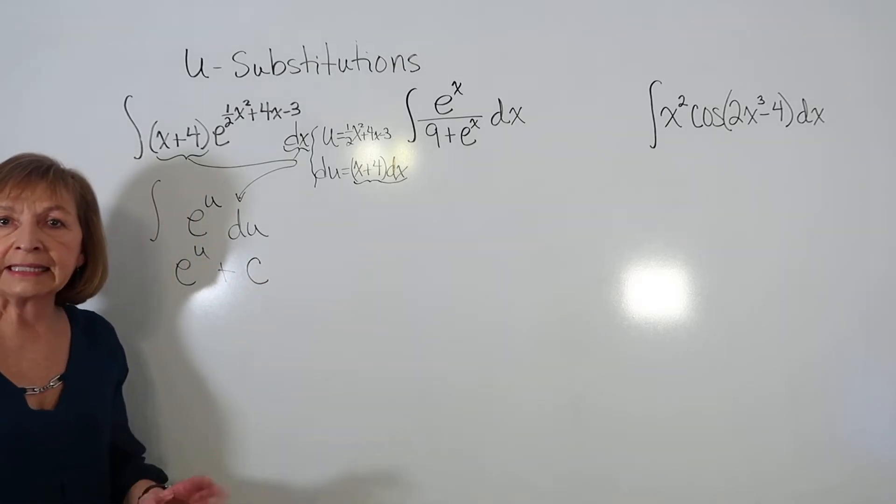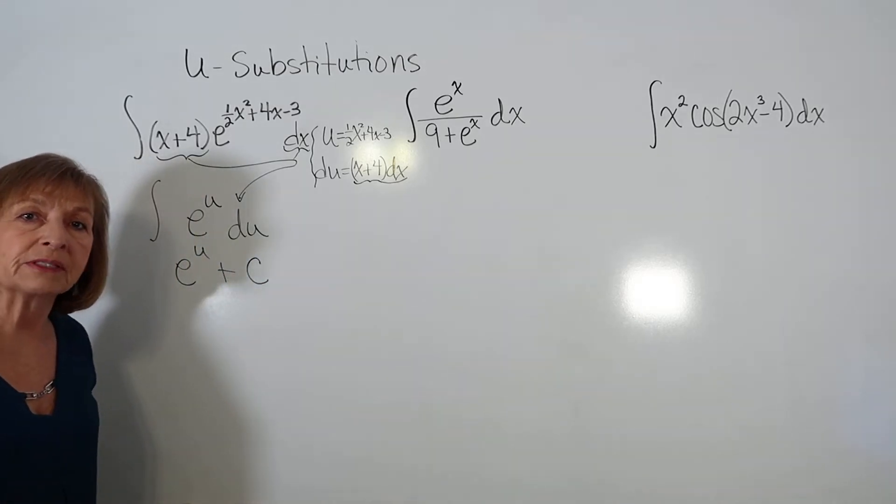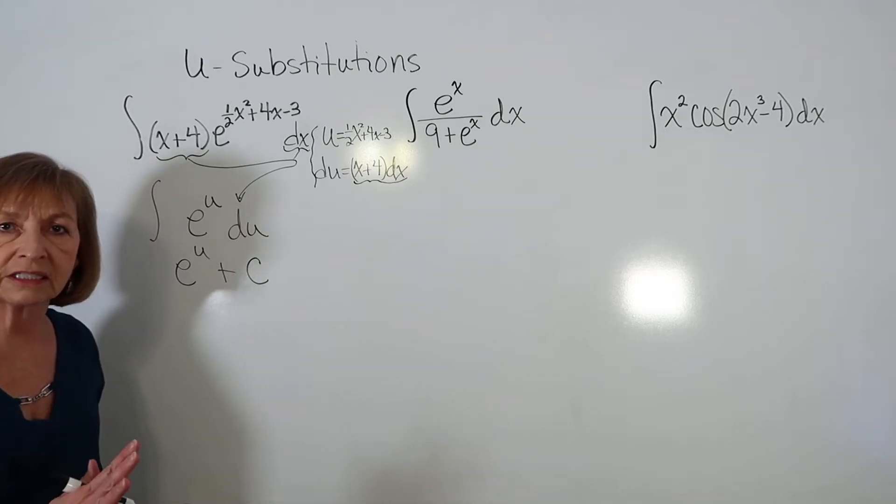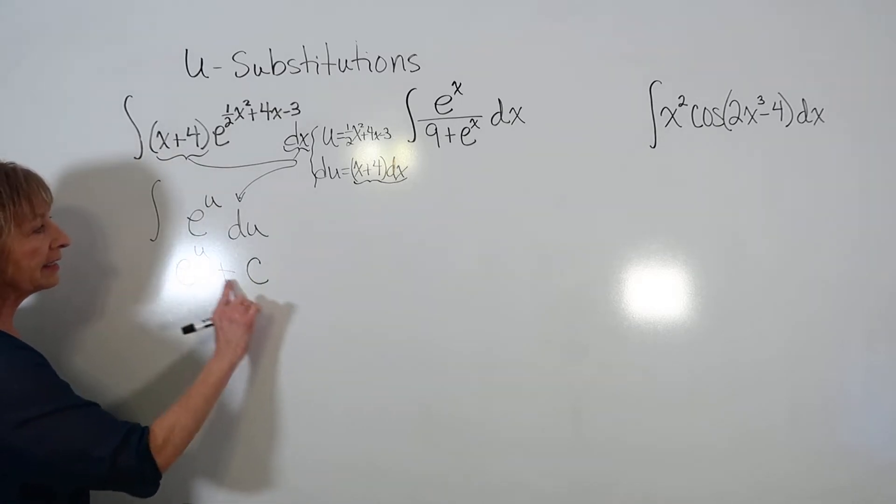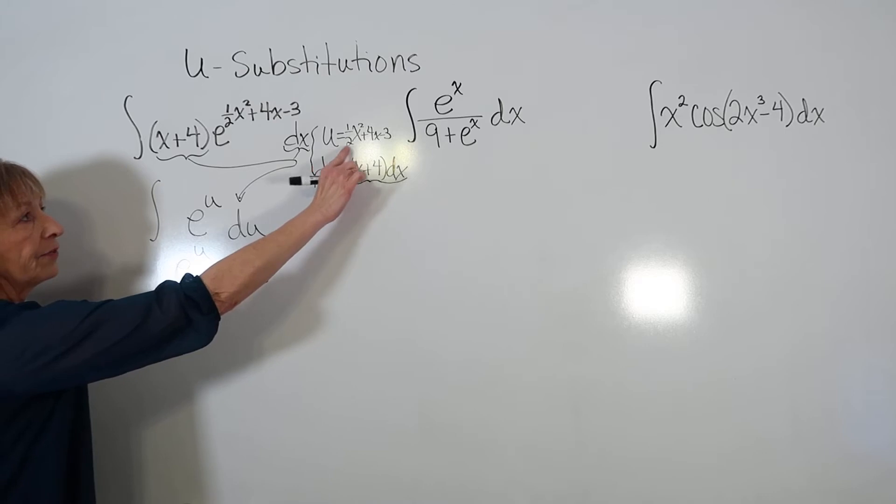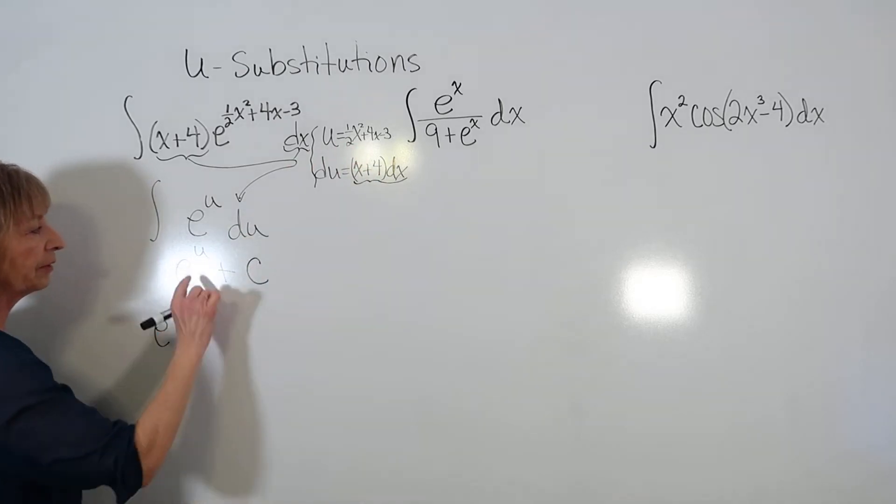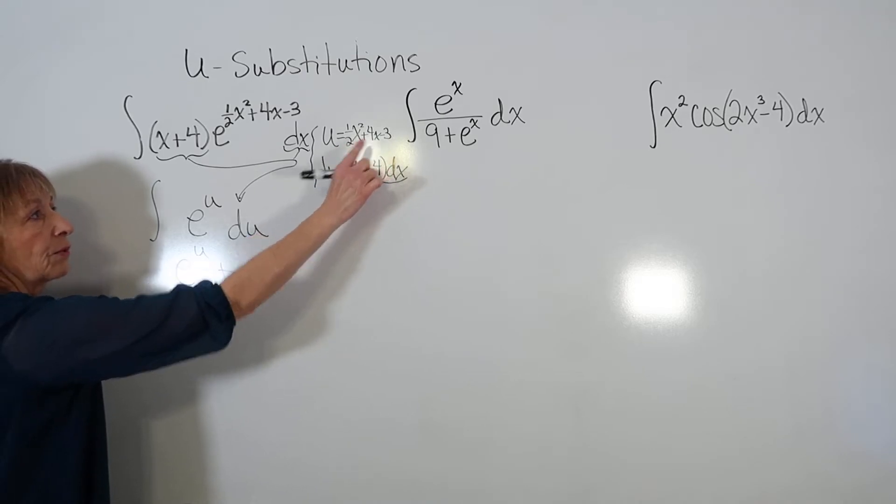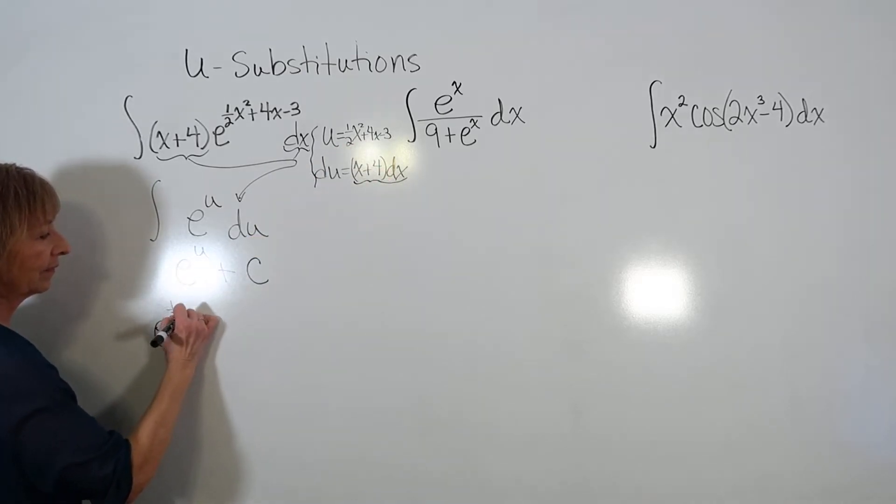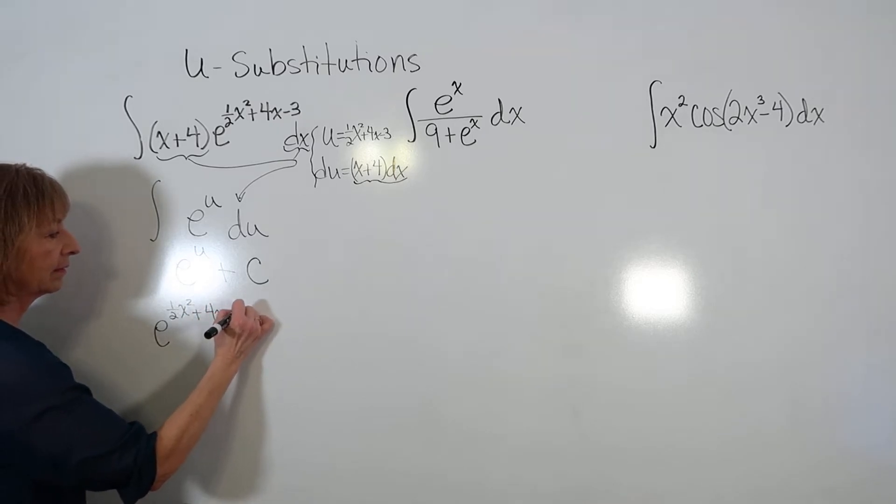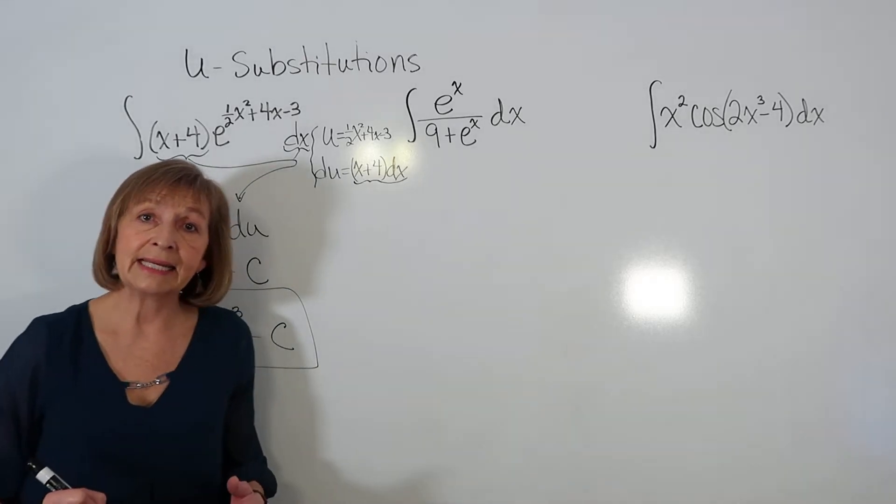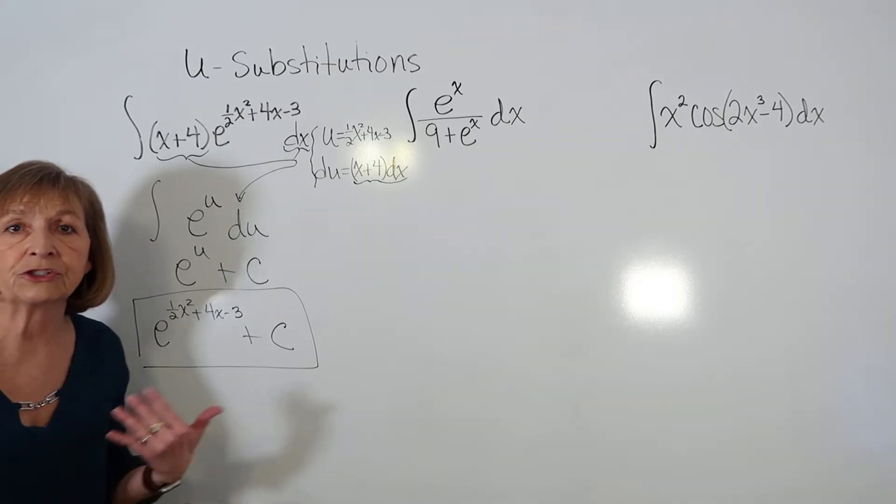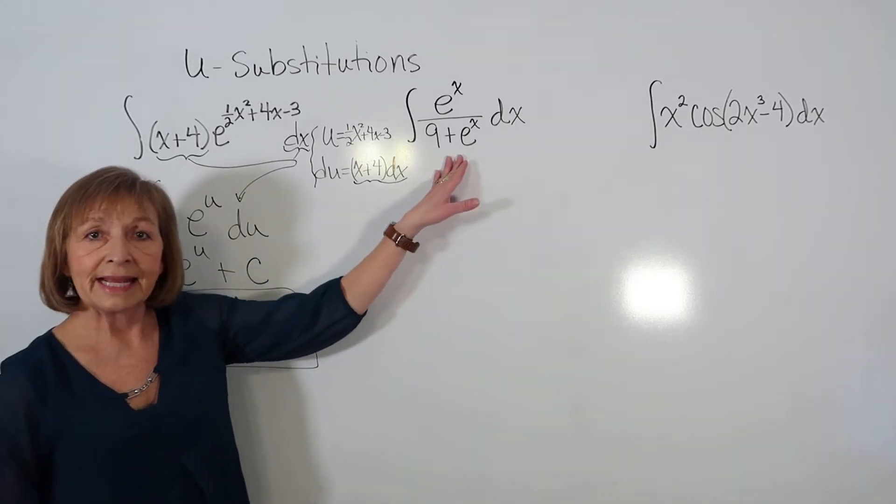And again, look back at the indefinite integral videos that I've posted and linked in the description of this one for a whole list of the rules so that you can look at what we're doing as we go through this. Then now that it's integrated, I'm going to take out the u and put back what it is in the original variable. So it's e to the u is 1/2 x² plus 4x minus 3, and then plus c. And remember, you can always check these by taking the derivative of what you got as your answer and making sure you get that integrand back. Let's look at the next one.